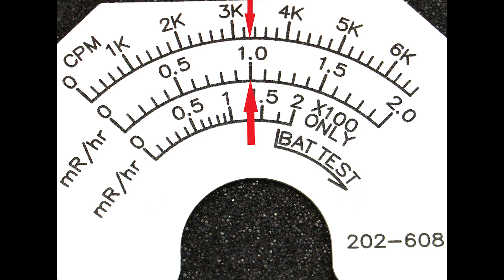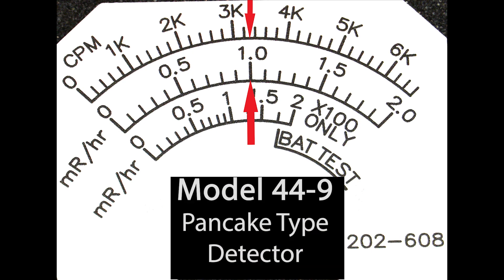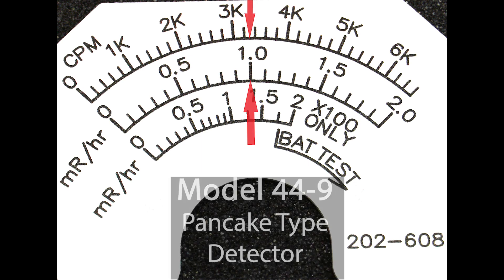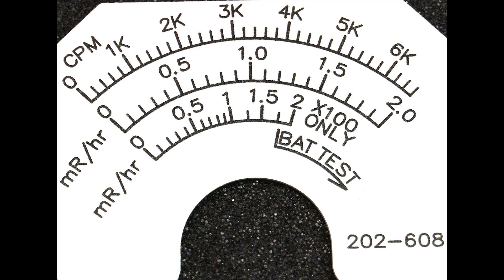In this example, the 1 mr per hour mark on the middle arc lines up with 3.3k CPM on the upper arc. Therefore, this meter face should only be used with a detector that receives 3.3k CPM per mr per hour, such as the Ludlum Model 44-9 pancake GM detector. Note that while you can use other detectors that do not have the same CPM per mr per hour sensitivity with this meter face, only the CPM scale is valid for those other detectors.